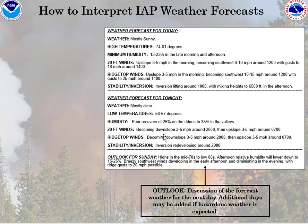Lastly, we have an outlook, which is a discussion of the forecast weather for the next day. Additional days may be discussed if hazardous weather is expected. For instance, here it's just talking about Sunday and Monday, but if thunderstorms were forecast on Monday or Tuesday, that might also be highlighted.